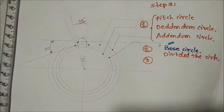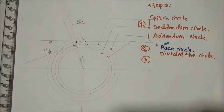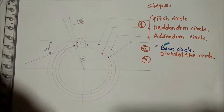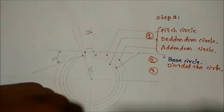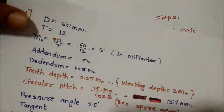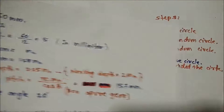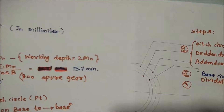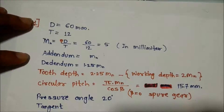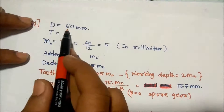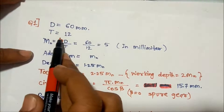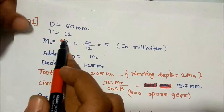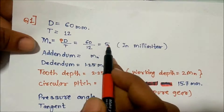The single tooth is now completed. Let's draw the full gear. We need some data: the diameter of the gear is 60 mm, the number of teeth is 12, and the module is 5.